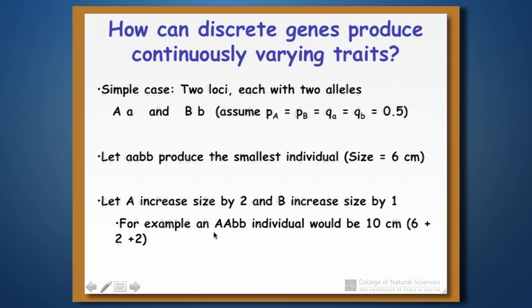For example, an individual with genotype big A, big A, little b, little b starts out at six centimeters, but because it has two big A alleles, that adds another four centimeters to its size. So the individual with this genotype ends up being 10 centimeters.